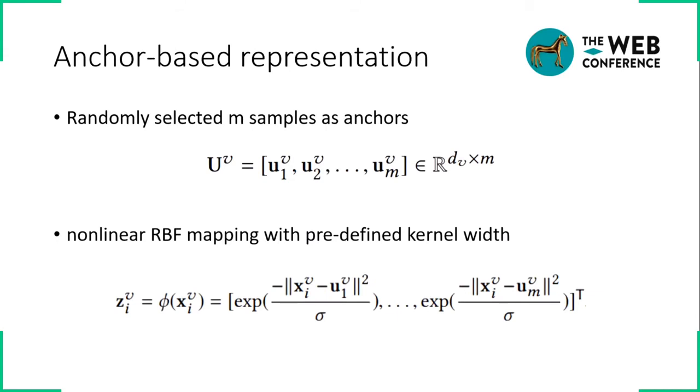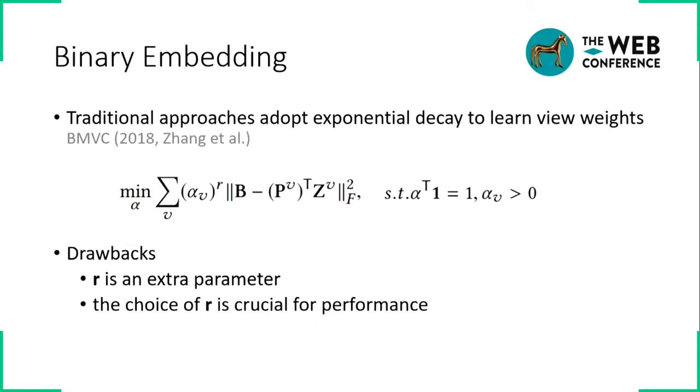Before we go into the binary representation learning, first we introduce the anchor-based representation. By randomly selecting m samples as anchors, we perform the nonlinear RBF mapping with the predefined bandwidth. The new representation Z is obtained. Traditional approach adopts exponential decay to render view weights. The main drawback is the actual parameter. The tuning of the r is crucial for clustering performance.